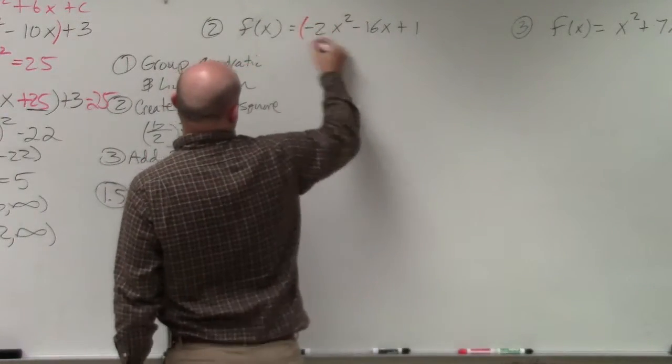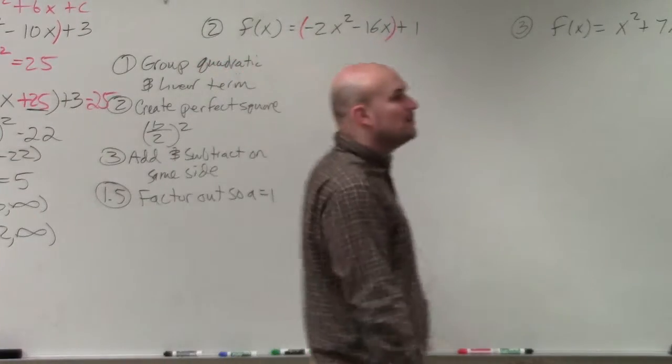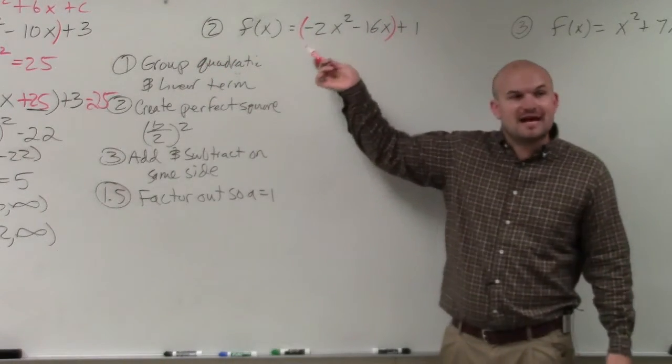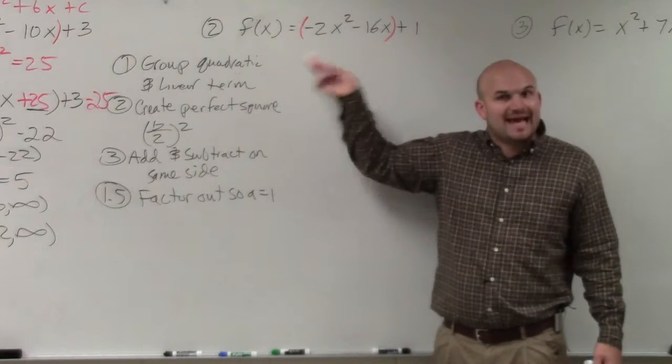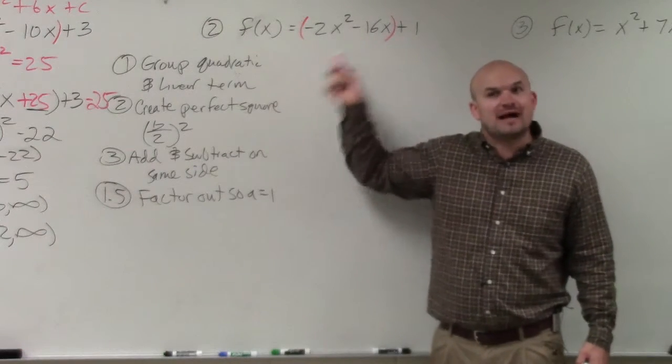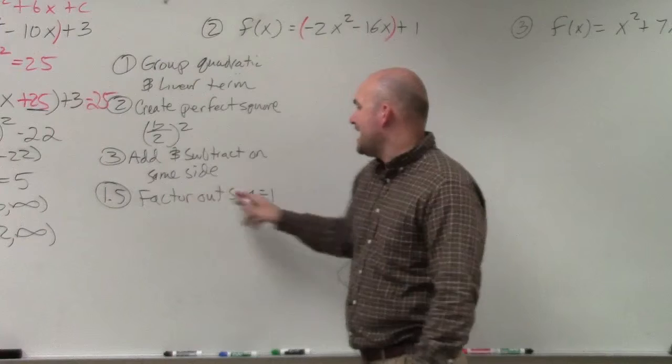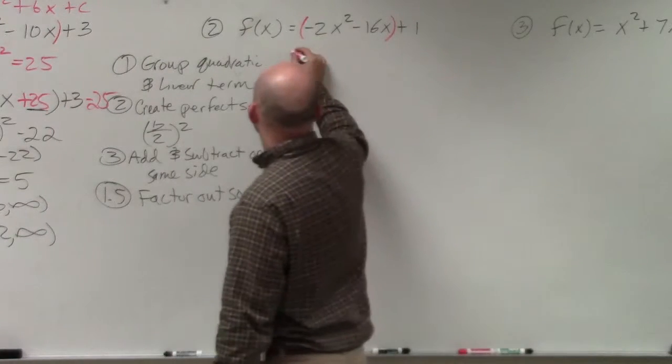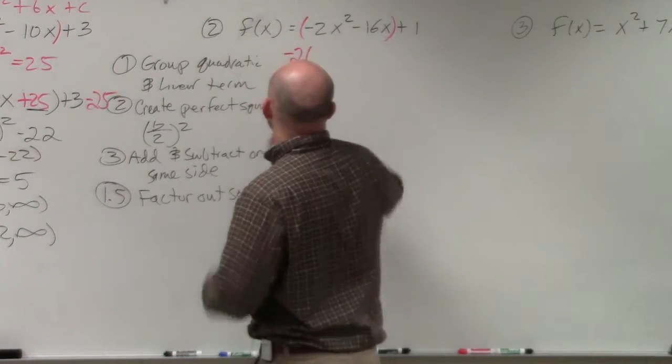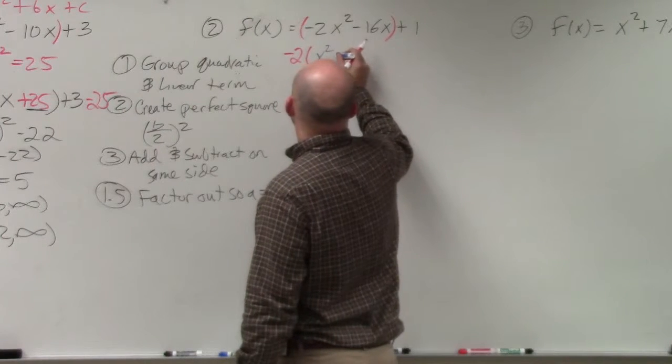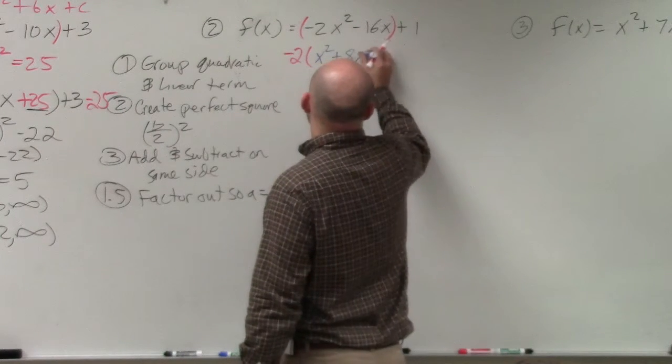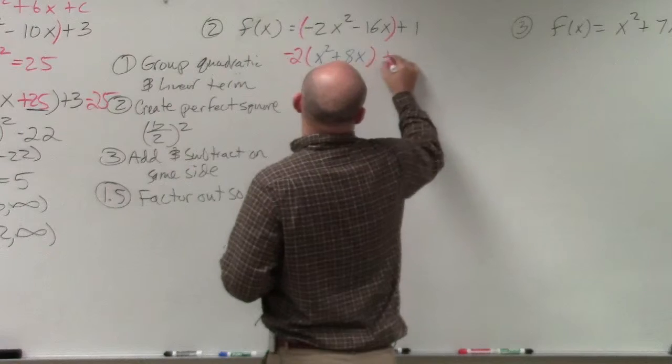Now step 1.5 comes in because, ladies and gentlemen, our a is not 1. So we have to make a equal to 1. You have to factor out a to make a equal to 1. So what I'm going to do is factor out a negative 2. That's going to leave me with x² + 8x + 1.